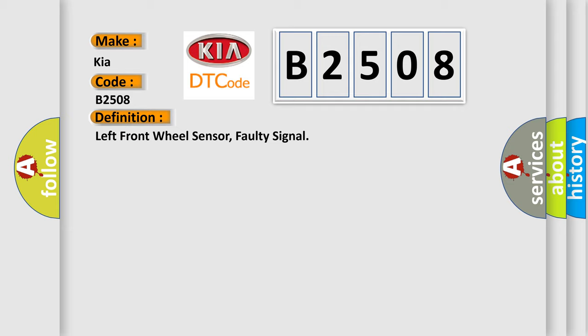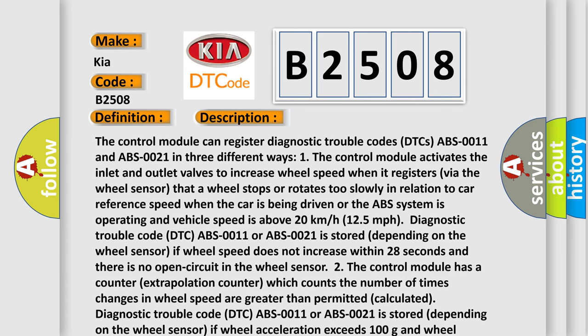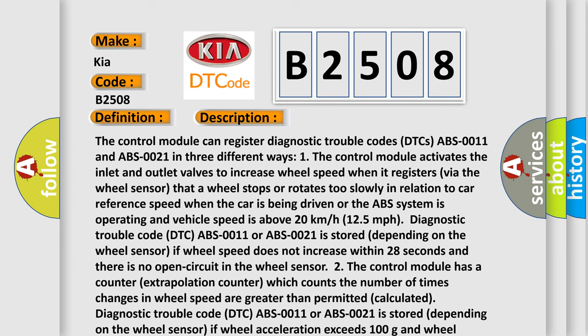And now this is a short description of this DTC code. The control module can register diagnostic trouble codes DTCs ABS-0011 and ABS-0021 in three different ways.